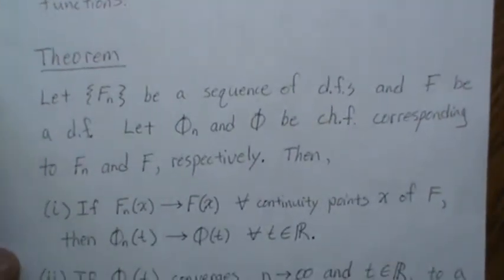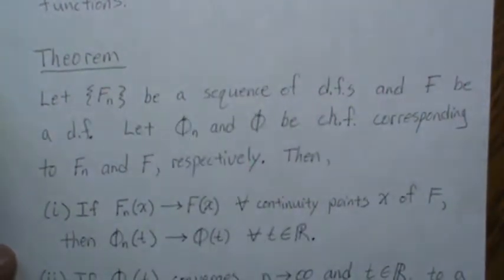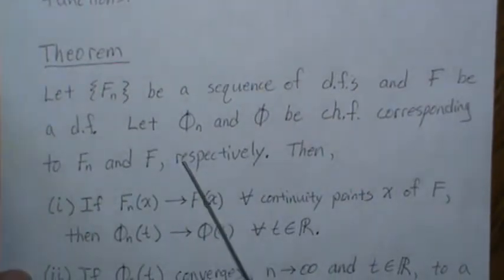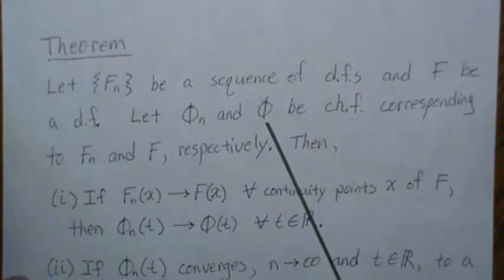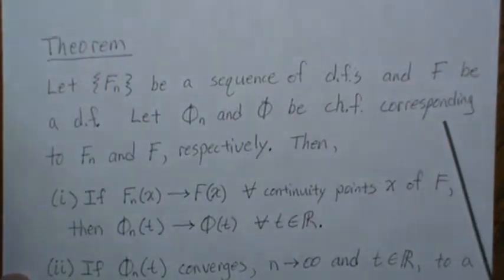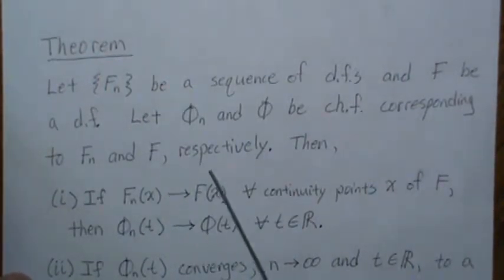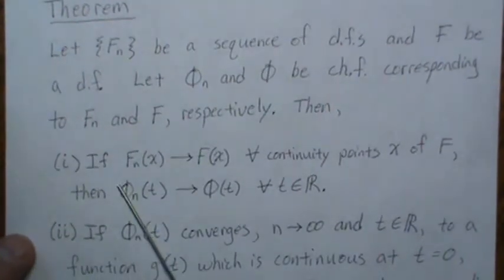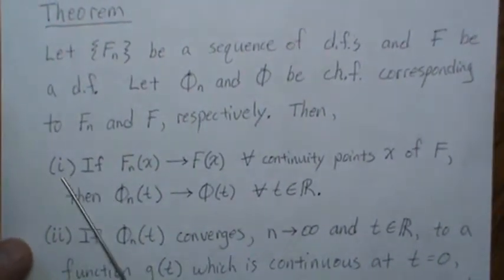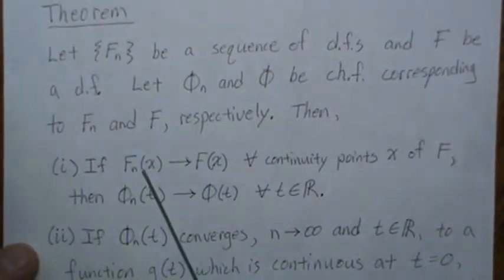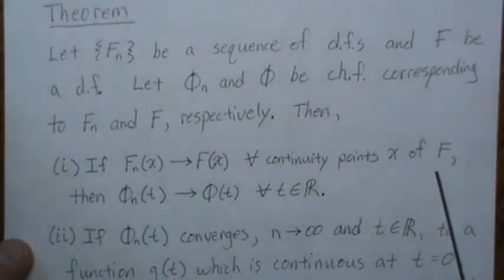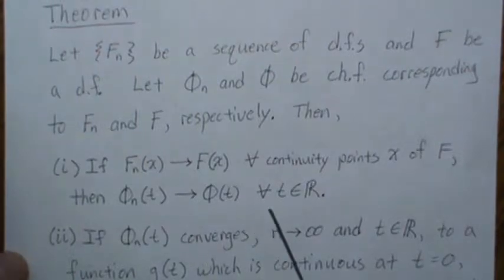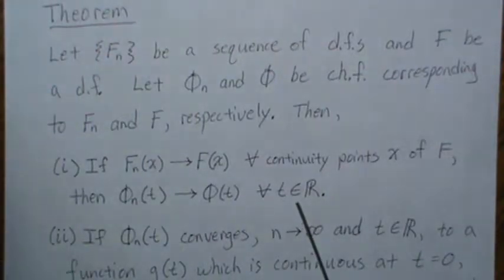So the theorem states: let Fn be a sequence of distribution functions and F be a distribution function. Let φn and φ be the corresponding characteristic functions of Fn and F respectively. Part one says if the distribution functions converge at all the continuity points of F, then the characteristic functions converge.